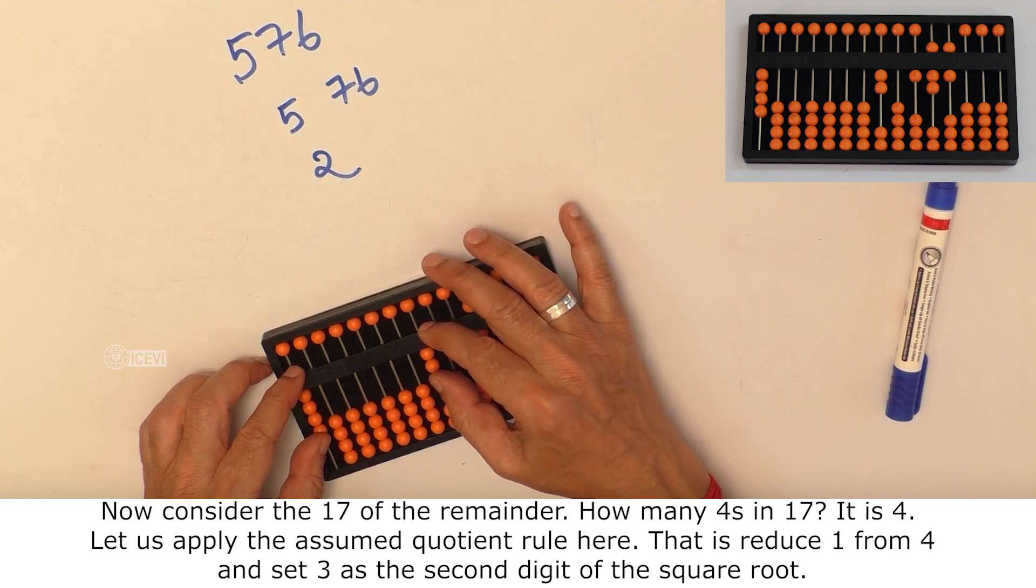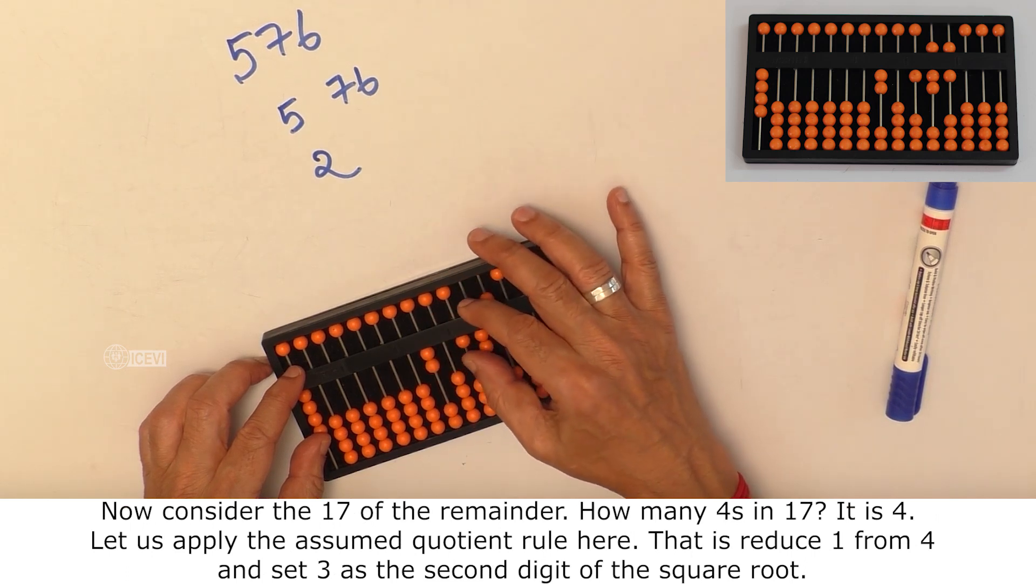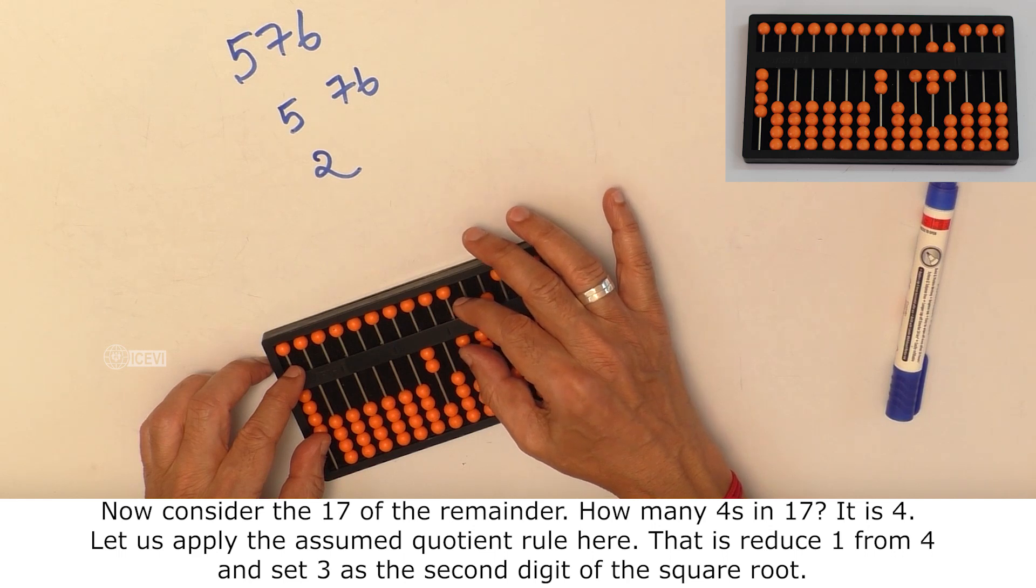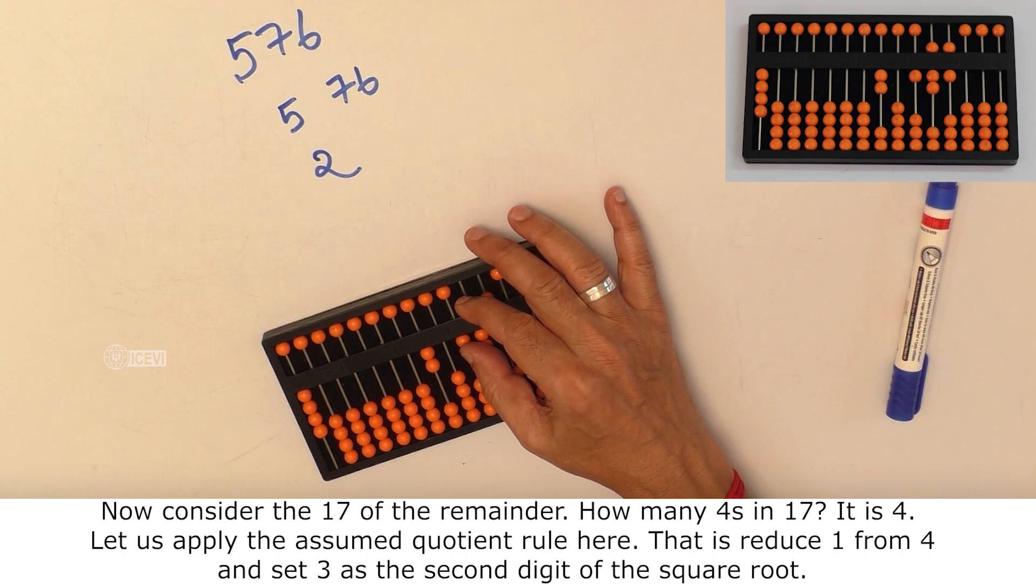Now consider the 17 of the remainder. How many 4s in 17? It is 4. Let us apply the assumed quotient rule here.